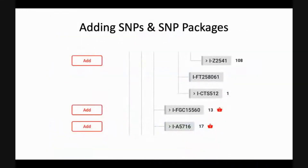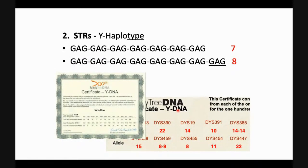This is how you're able to add either individual SNPs — if you're in a project and somebody says you need to test a specific SNP, you can add it. Or a lot of times they offer SNP packages where they know a certain set of SNPs go together, used to define a broader haplogroup. When looking at your results, you can see these and are invited to add them to your test.